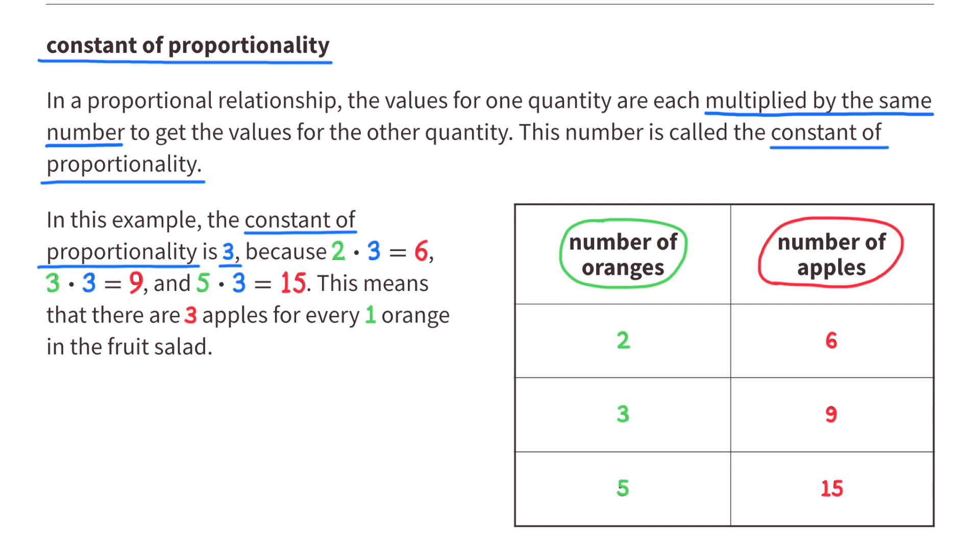In this example, the Constant of Proportionality is 3, because 2 times 3 equals 6, 3 times 3 equals 9, and 5 times 3 equals 15. This means that there are 3 apples for every one orange in the fruit salad.